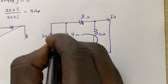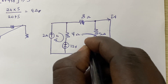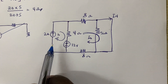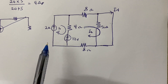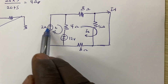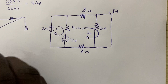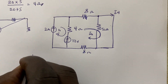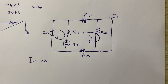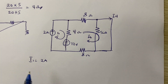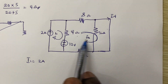We have I1 and I2 as our mesh currents. Since we have a current source, we already know that I1 equals 2 amps. So we just set I1 equal to 2 amps and now deal with the second loop.